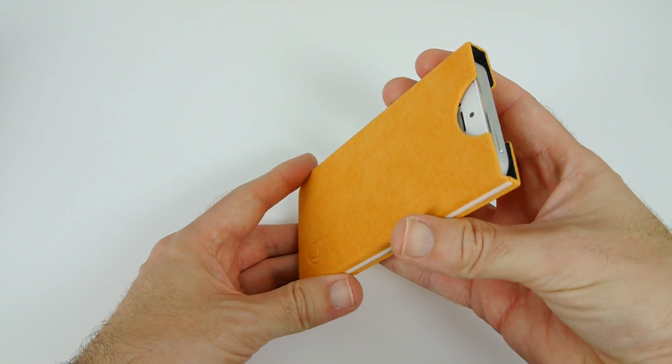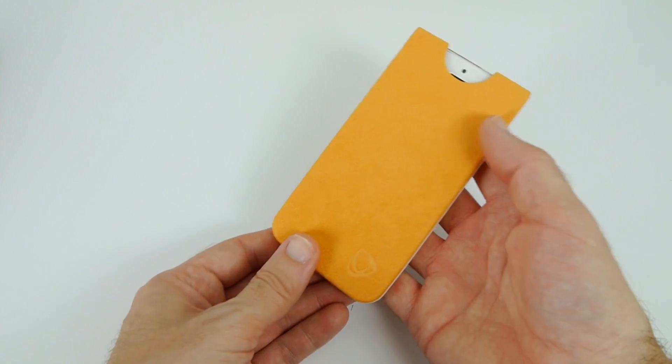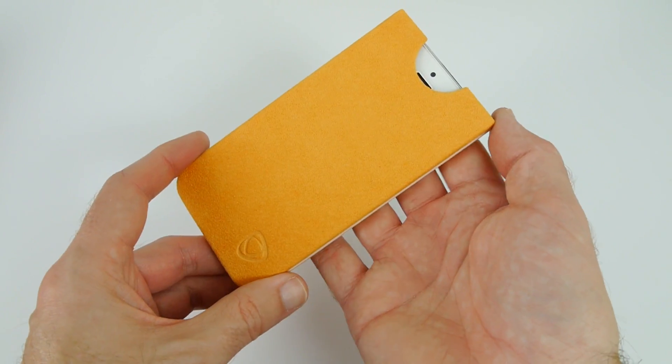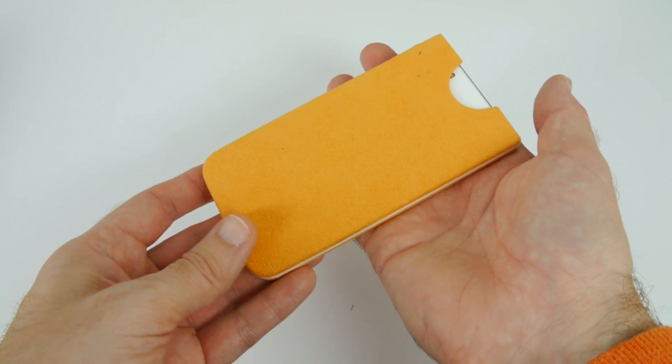No protruding edges at the top. This is for somebody who likes to really carry their iPhone around naked. Not them, the iPhone of course. And then just have it in a case when it's inside their pocket.